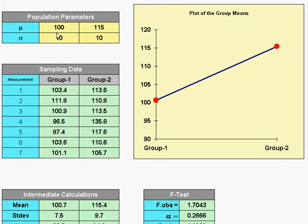So up here I've set a population parameter of 100 and a standard deviation of 10, and each time I refresh the screen I'll draw a new sample of 7 out of this universe.